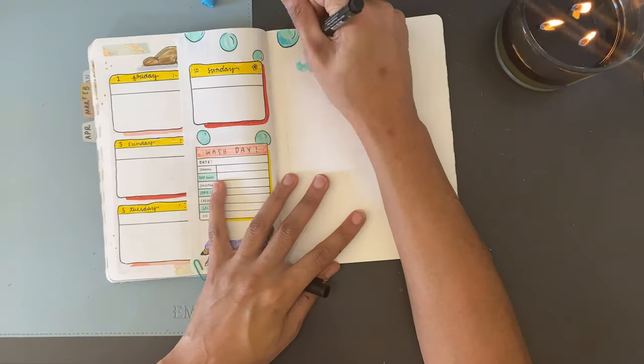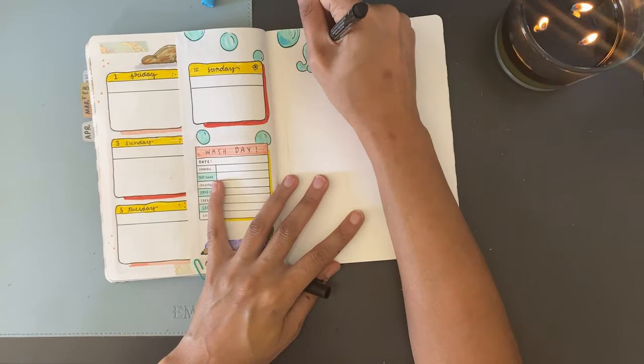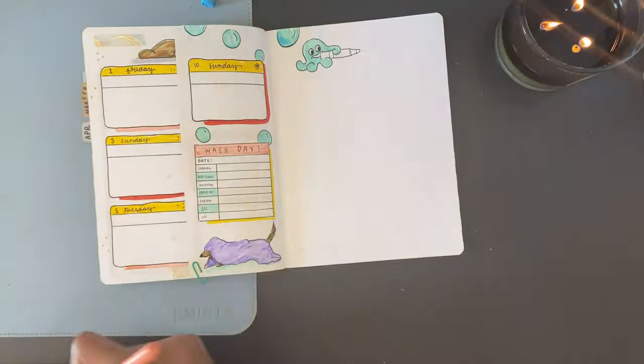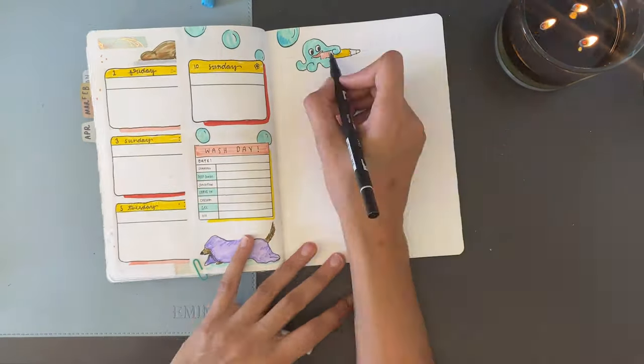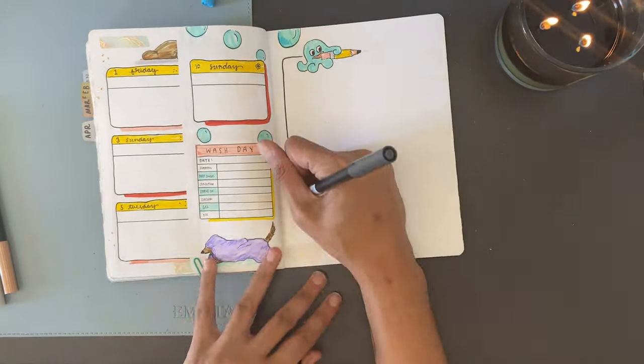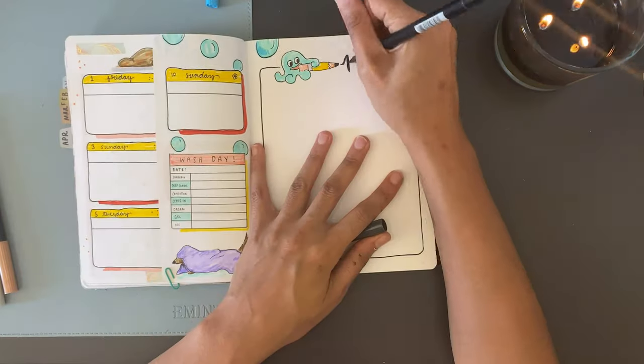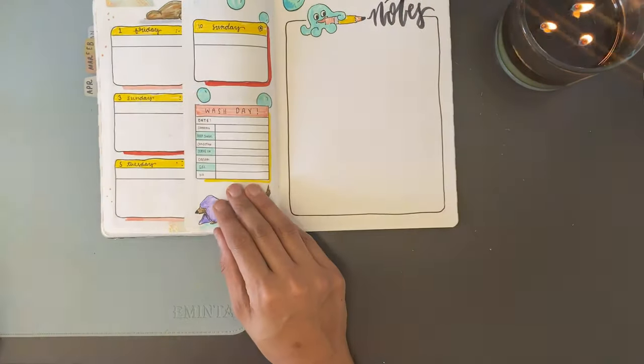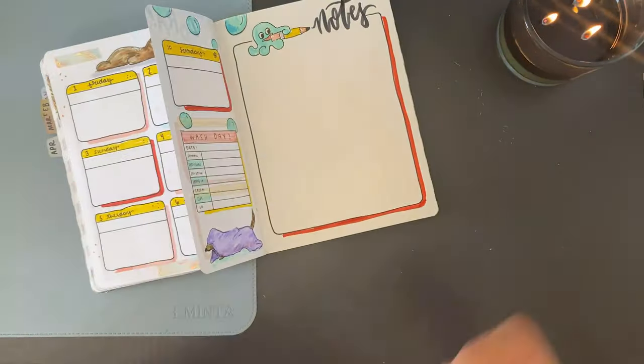For the full notes page, I'm just doodling Oliver holding a pencil like he just wrote the word notes on the top. I'm going to give this a border with the drop shadow and add some doggy crumbs and bones, and I think that's a done deal.